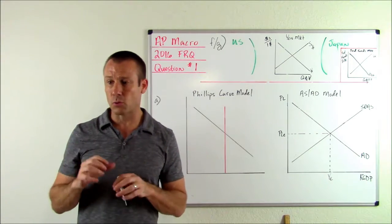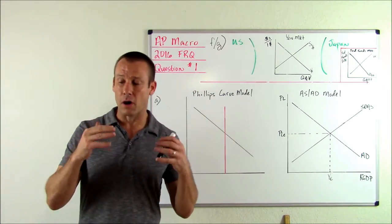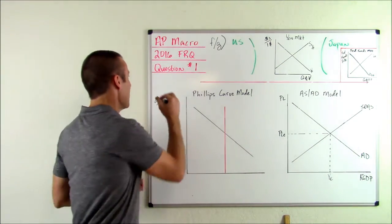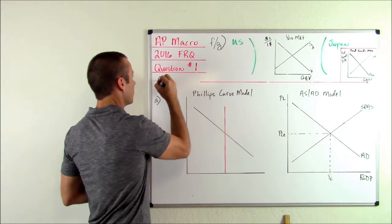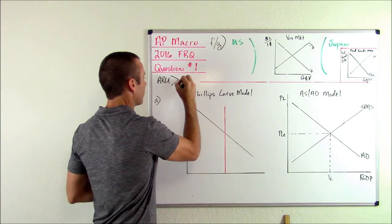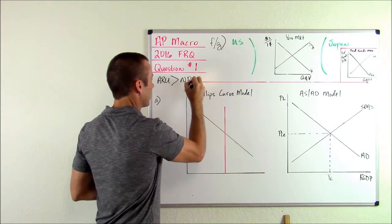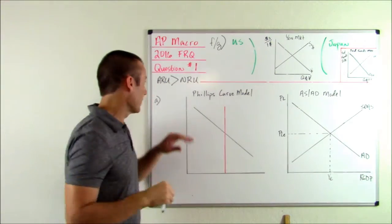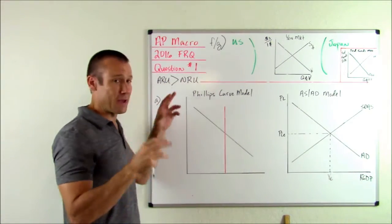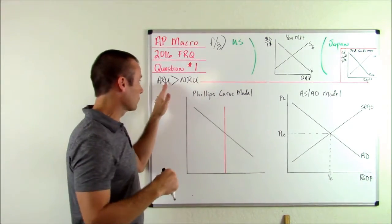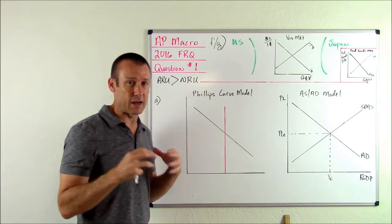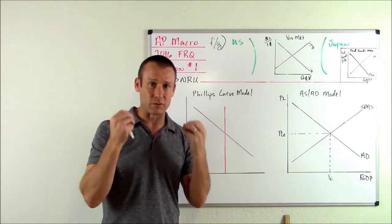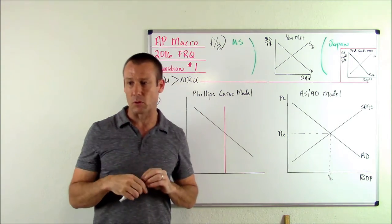With an actual unemployment rate greater than the natural rate of unemployment. That means we're in a recession — we have cyclical unemployment. The actual rate is greater than the natural rate, we've got cyclical unemployment, we are in a recession, we have a recessionary gap going on.